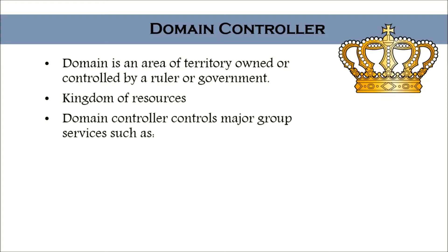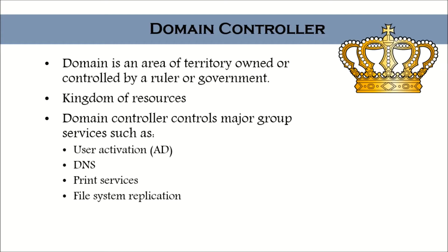A domain controller controls major group services such as the Active Directory services, DNS (Domain Name Services), print services, file system replication, Windows Time Service, DHCP, and many many other services. They are all under the control of your domain controller.